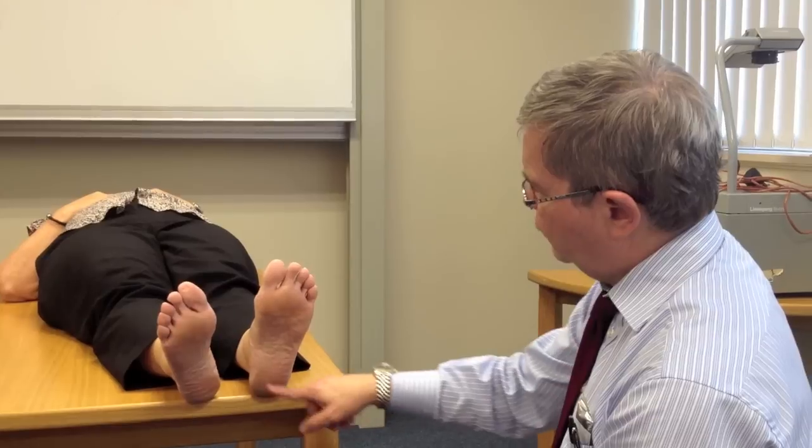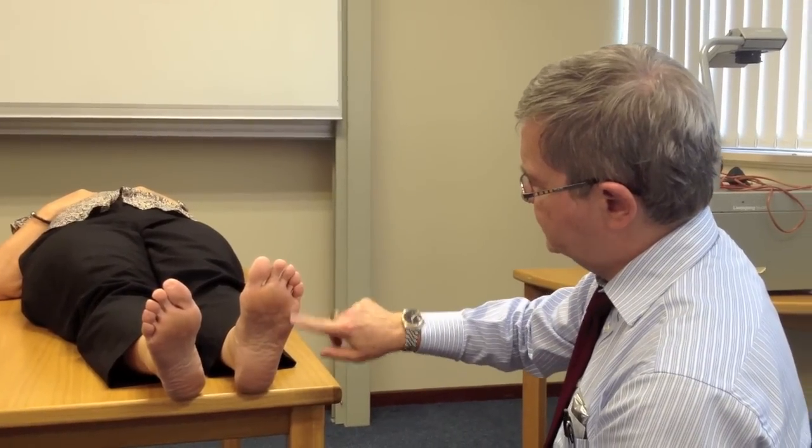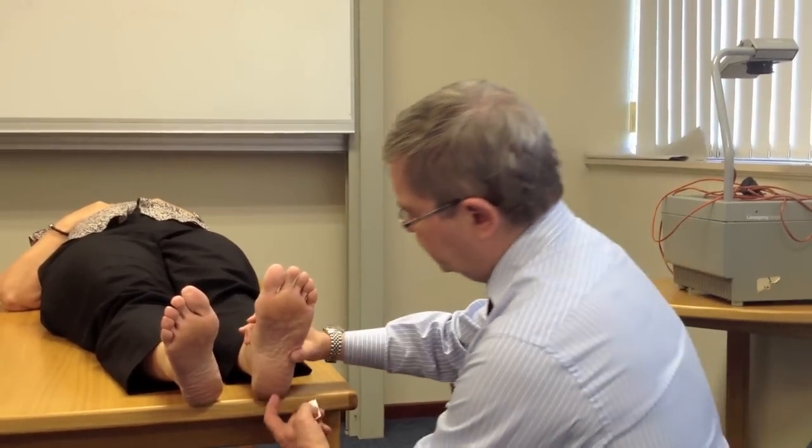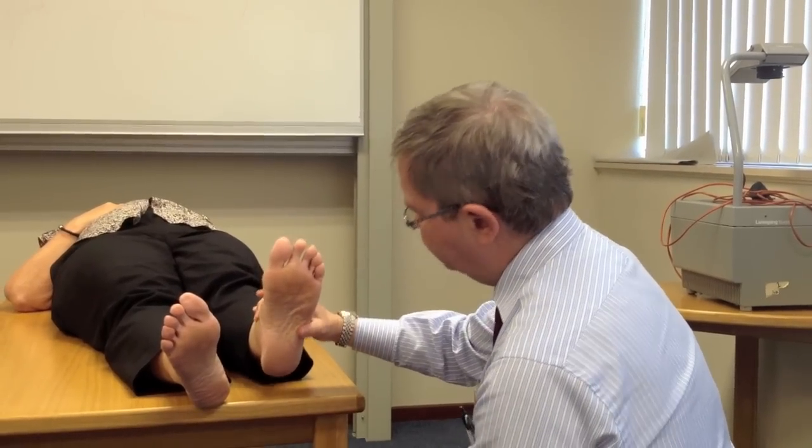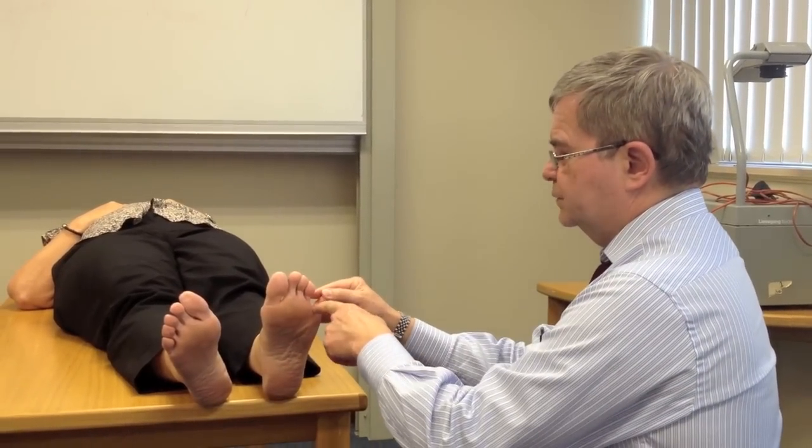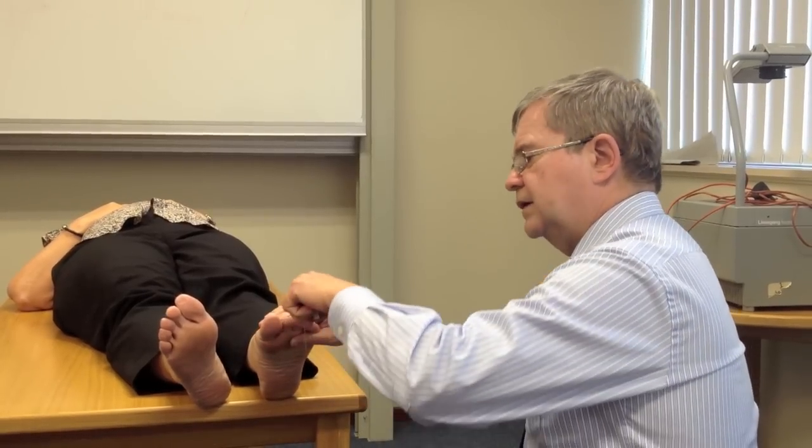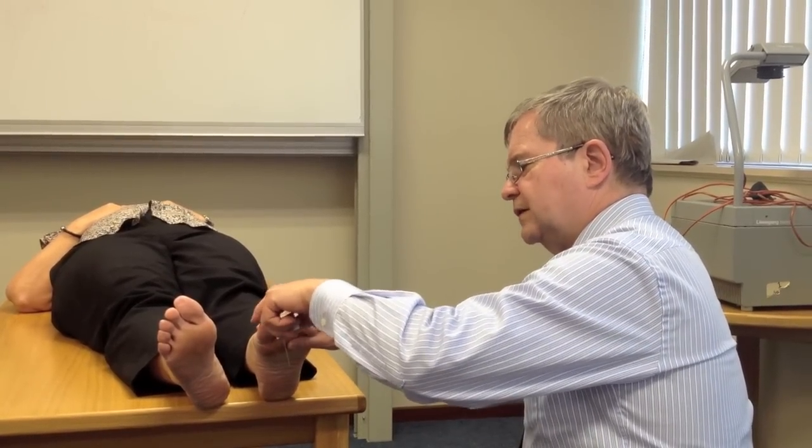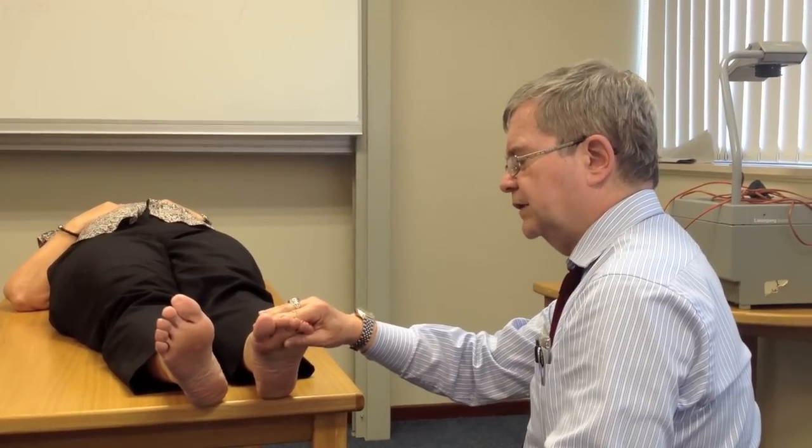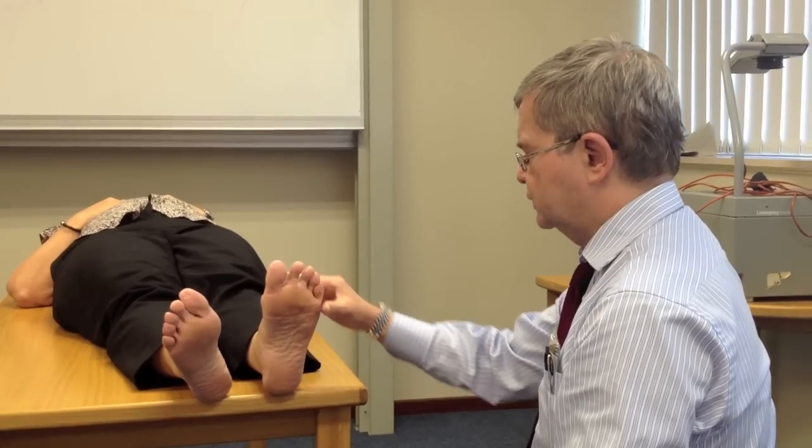On exam, look for deformity, callus, blister, linear crack or fissure. Check the toe webs because there may be a crack or fissure. Look on the dorsal surface. Look at the nail folds for any thickening or ingrown nail folds.